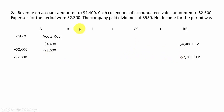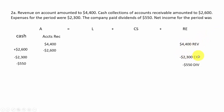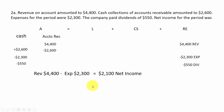Expenses for the period were $2,300 — $2,300 comes out of cash, assets go down, and the retained earnings side goes down by $2,300. The company paid dividends of $5,500 — cash goes down $5,500, retained earnings goes down $5,500. Net income is always revenues minus expenses. Dividends do not affect income; that's something you take out of retained earnings to give to shareholders. So we have net income of $2,100.